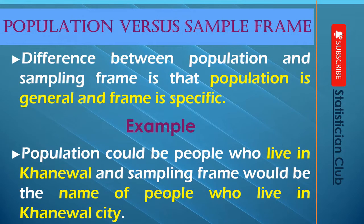Population versus sampling frame. The difference between population and sampling frame is that population is general and frame is specific. For example, population could be the people who live in Khaniwal city, and the sampling frame would be the names of people who live in Khaniwal city.